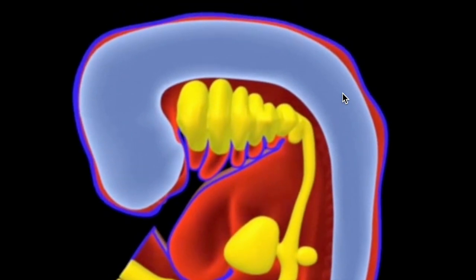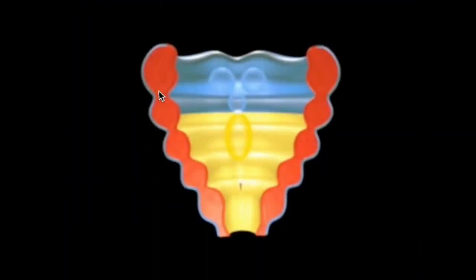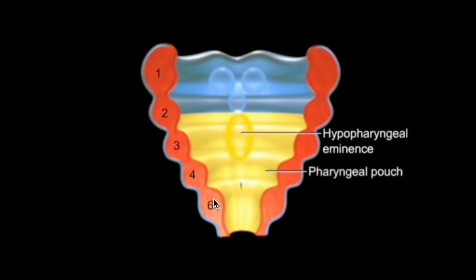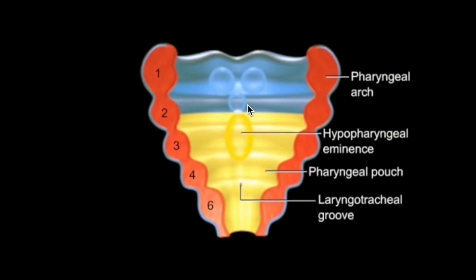If we take a transverse section of this embryo, we see six pharyngeal arches, which we'll learn more about in coming weeks. What I want to point out briefly is the hypopharyngeal eminence — a midline swelling of the endoderm in the third and fourth pharyngeal arches. This is going to give rise to not only the tongue but also the epiglottis.